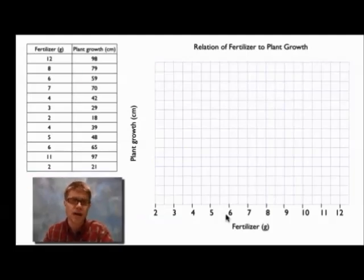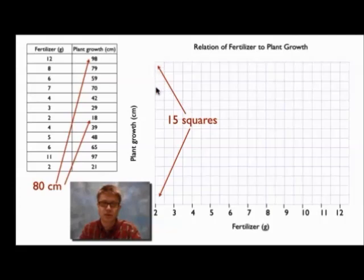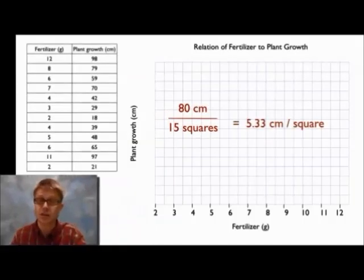Now let's try and do the y-axis or plant growth. I count 15 squares here on my graph paper. And I have got a range of 80 centimeters of plant growth. So likewise I could divide that 80 centimeters by the number of squares and that is going to give me 5.33 centimeters per square. If I were to round down to 5 I wouldn't have enough room to put all of my data. So what I can do is round up and say that maybe every one of these grid lines is going to be 6 centimeters.